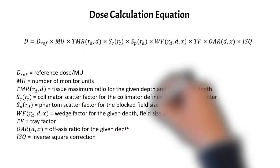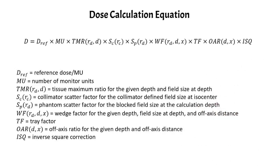I'm just going to pop up some of the definitions here. DREF is your reference dose per monitor unit established during linac calibration. MU is your number of monitor units. TMR is the tissue maximum ratio for the given depth and the field size at depth.